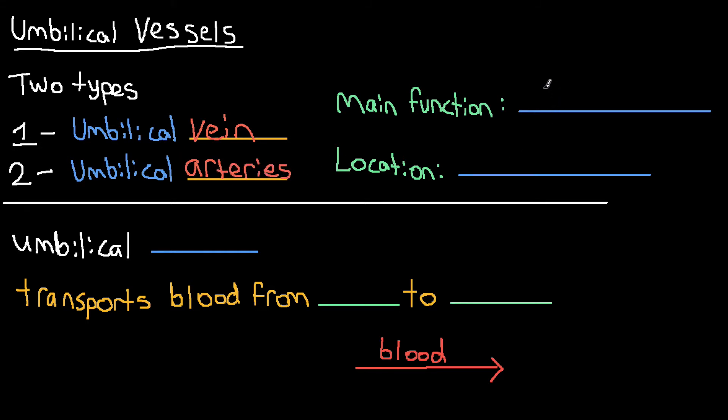The main function of both the veins and the arteries is to transport blood. But there is a difference between them. They're either going to transport nutrients or waste, depending on if you're a vein or an artery. The location of both umbilical vessels is in the umbilical cord. We have one umbilical vein and two umbilical arteries.